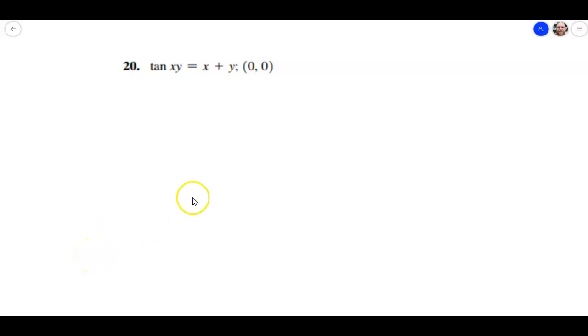Hey everybody, this is Mr. Beckstrom, and I'm doing an example from section 3.8 on implicit differentiation. This is number 20, and it's going to ask us to first find dy over dx, or the derivative of y with respect to x, and then it's going to ask us to find the slope of the tangent line at the given point (0, 0).